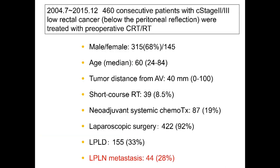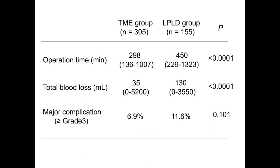Between 2004 and 2015, 460 consecutive patients with clinical stage 2–3 low rectal cancer below the peritoneal reflection were treated with preoperative CRT or RT. The median tumor distance from the anal verge was 14 mm. Neoadjuvant systemic chemotherapy was performed in 19% of patients, and laparoscopic surgery was performed in 92% of patients with no conversion to open surgery. Lateral lymph node dissection was performed in 33% of patients, and pathological lateral lymph node metastasis was identified in 44 patients. Operation time was significantly longer and total blood loss was significantly larger in the LPLD group compared to the TME group. The major complication rate tended to be higher in the LPLD group, although it did not reach statistical significance.